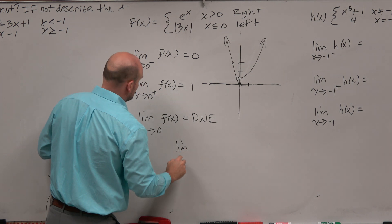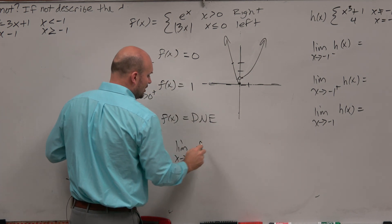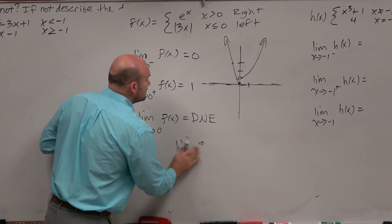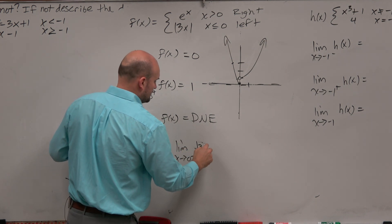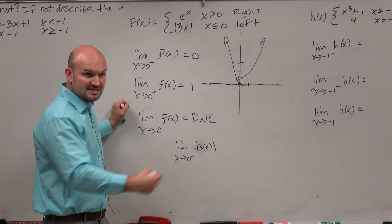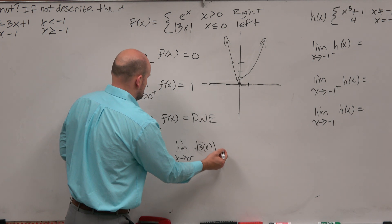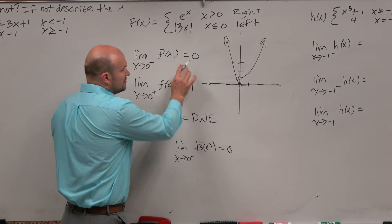So if I just want to do the limit as x is approaching 0 from the left, if I just plug in 0 into that function from the left, because that's 0 from the left. So 3 times 0 is 0, absolute value of 0 is 0, which is the answer we had.